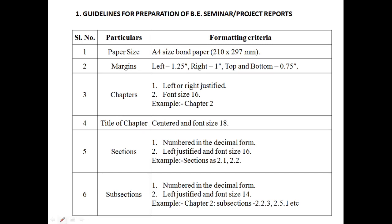These are the university guidelines to prepare a seminar or project report. The paper size should be A4. Margins: left 1.25, right 1, top and bottom 0.75. Chapters should be left or right justified and font size is 16. The title of the chapter is centered with font size 18, and sections are numbered in decimal form, left justified, with font size 16.